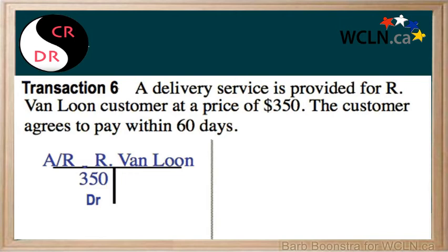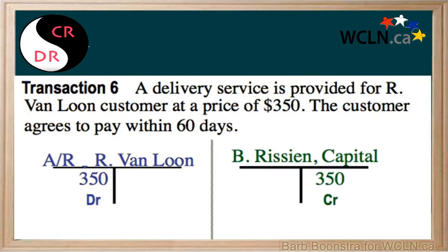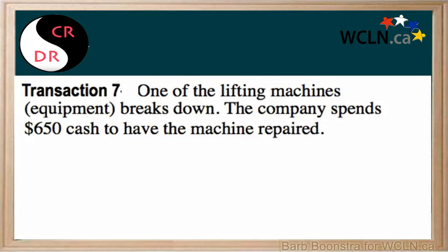Because cash is coming into the business — even though it is in 60 days — the value of the business has increased by $350. So the capital account, an equity account, increases on the credit side, and will be increased by $350.